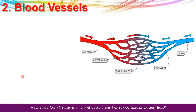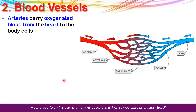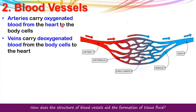In this lesson we are going to talk about blood vessels. We have arteries, then capillaries, and then veins. Arteries carry oxygenated blood from the heart to the body cells — they carry blood away from the heart. Veins carry deoxygenated blood from the body cells back to the heart, bringing the blood back into the heart.